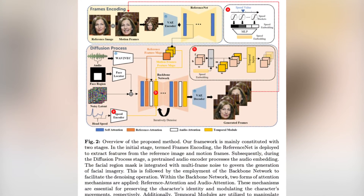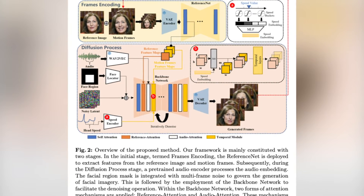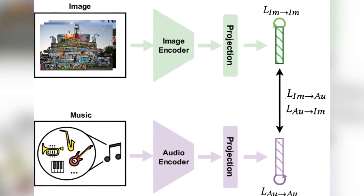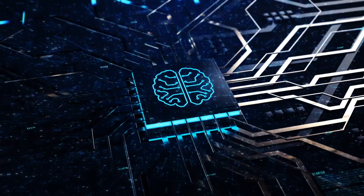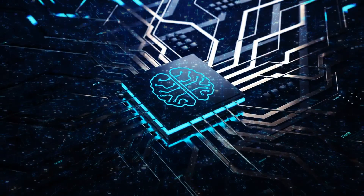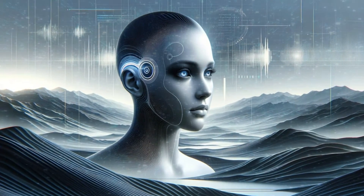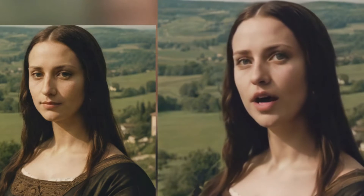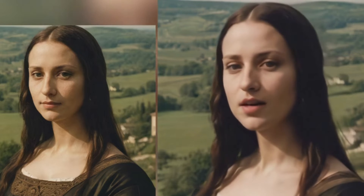Emo's framework operates in two key stages: frame encoding and diffusion. In the frame encoding stage, a reference net plays a vital role in extracting features from both the reference image and motion frames. Various attention mechanisms, such as reference attention and audio attention, help maintain identity and modulate movements. Additionally, temporal modules fine-tune motion velocity, ensuring a smooth and expressive video generation process. To uphold consistency with the input reference image, Emo refines the reference net approach by introducing a frame encoding module. This module plays a critical role in preserving the character's identity throughout the video generation journey, thereby enhancing the realism of the final output.